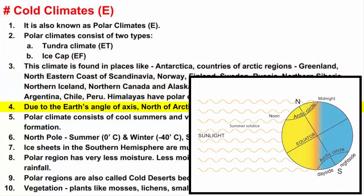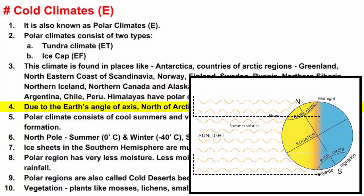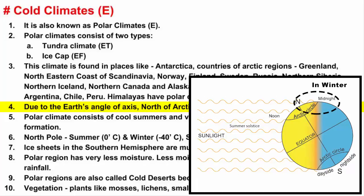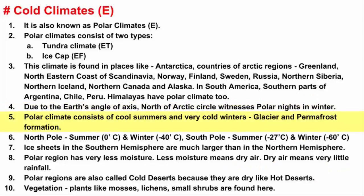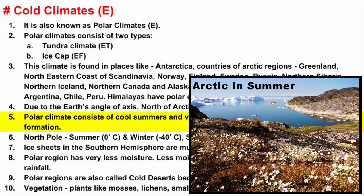If you look at this image, sunlight reaches the earth in a way where rays have much further to travel to reach the polar regions. The angle of the earth's axis also matters, because the area north of the Arctic Circle experiences polar night in winter. The further north you travel, the longer the polar night lasts.